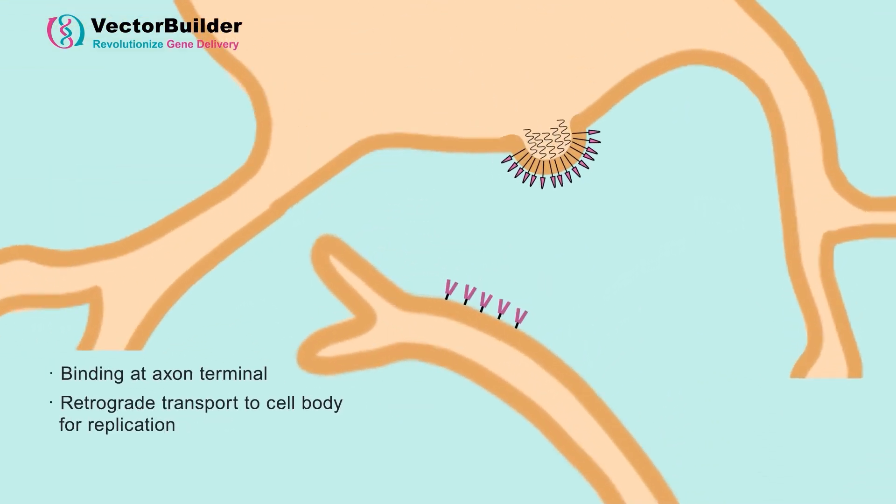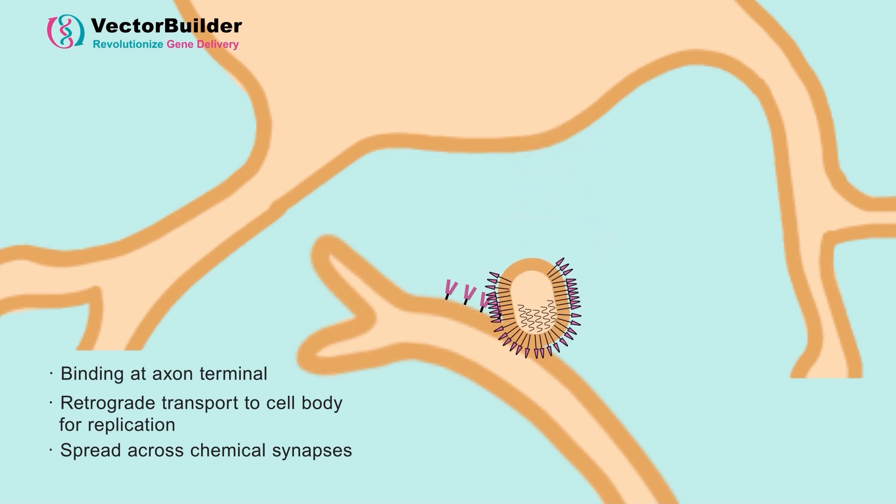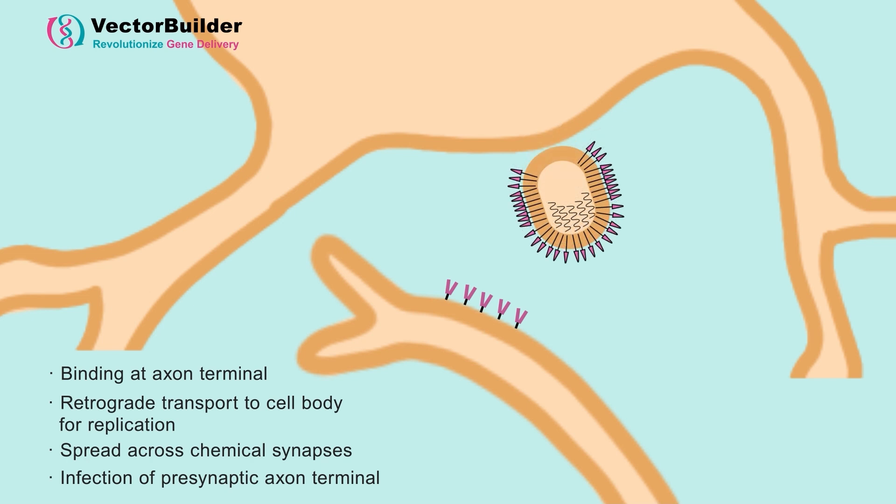The new virus buds off from the host cell with a glycoprotein, or G, coating. It then spreads up and across chemical synapses to presynaptic axon terminals, where the G protein facilitates entry into new host cells. This cycle continues, leading to progressive infection of presynaptic neurons along a network.